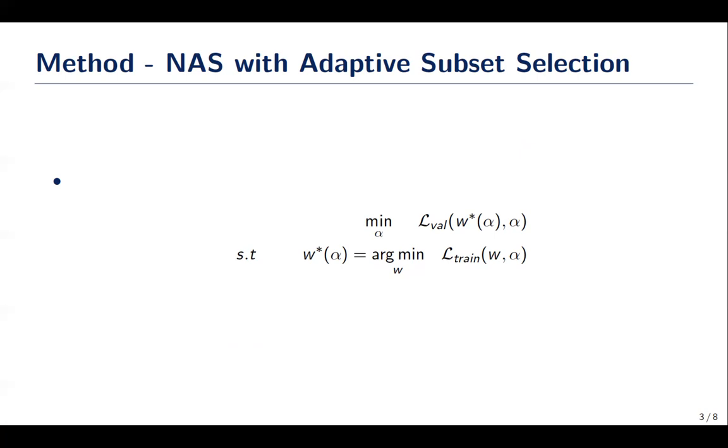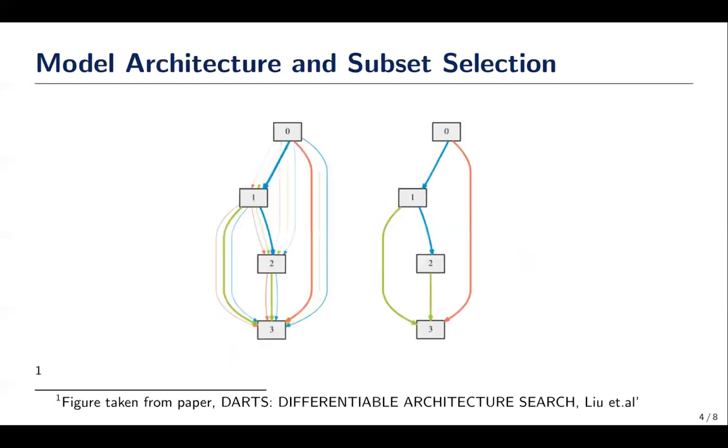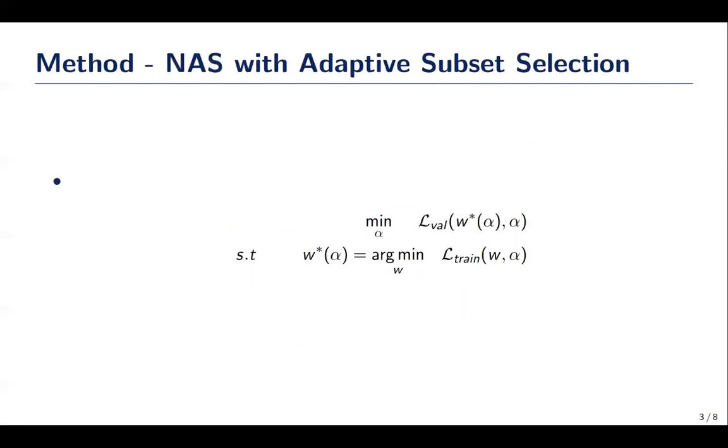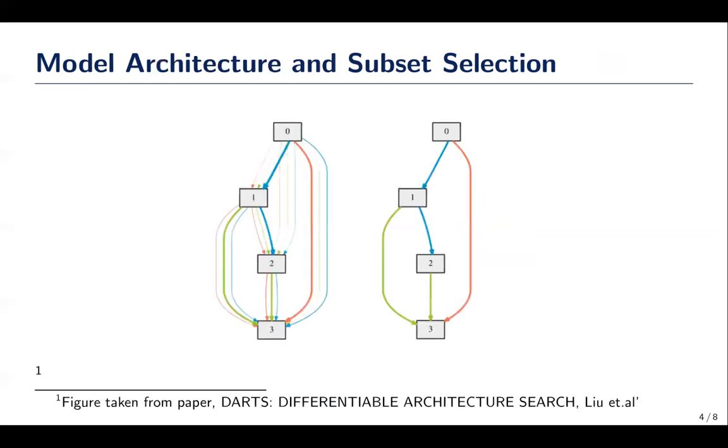This is solved using a bi-level optimization problem where in the inner loop we fix alpha and optimize for W, and in the outer loop we fix W and optimize for alpha. After training, we get the values for alpha for each operation and we select the operation with the highest alpha value between any two nodes.